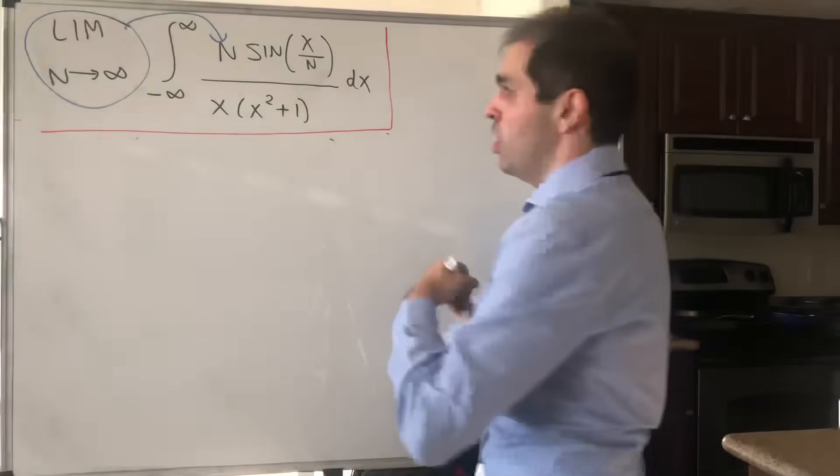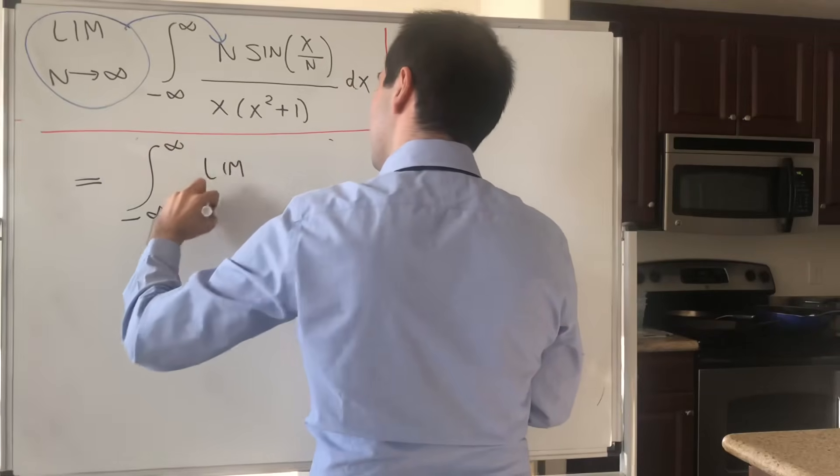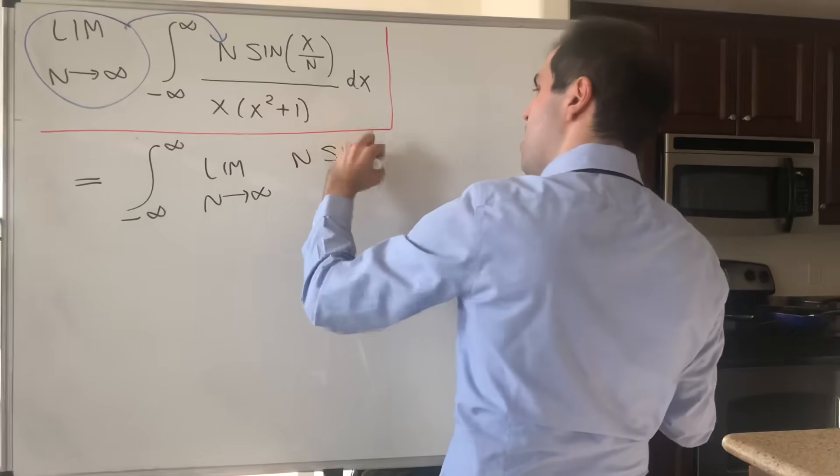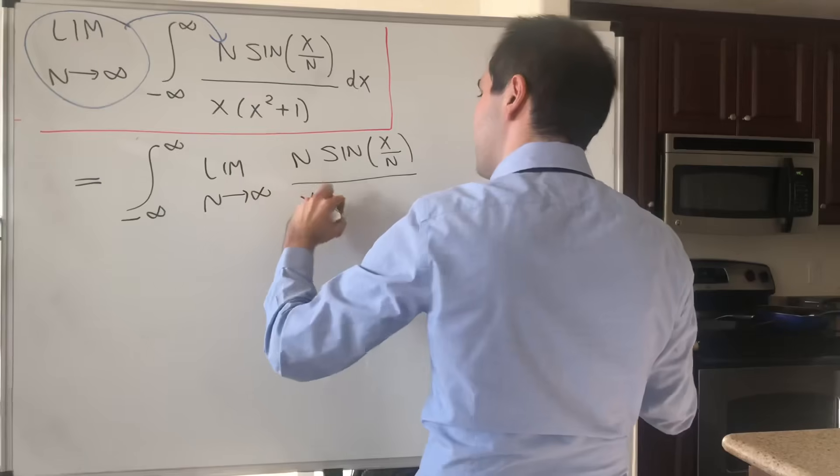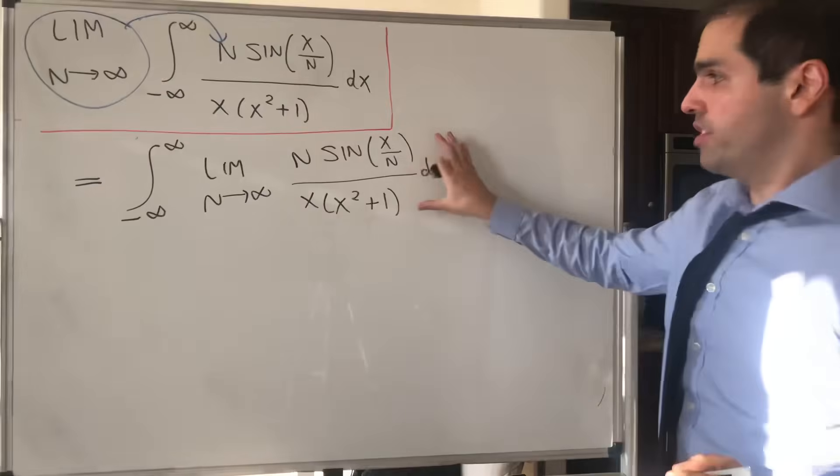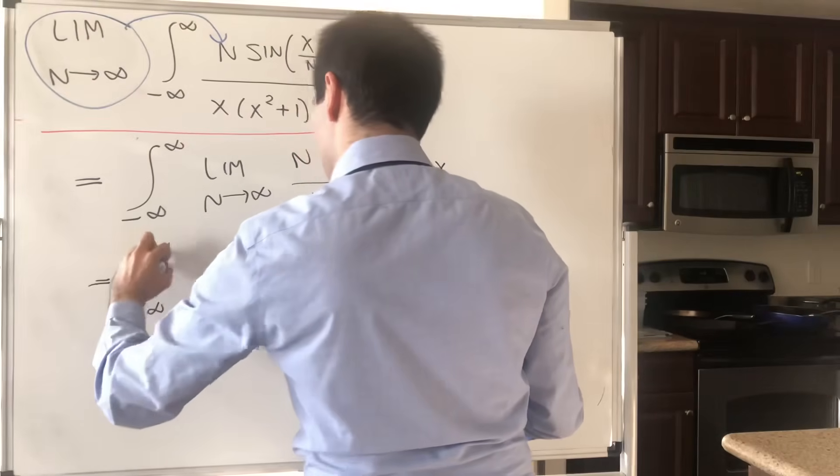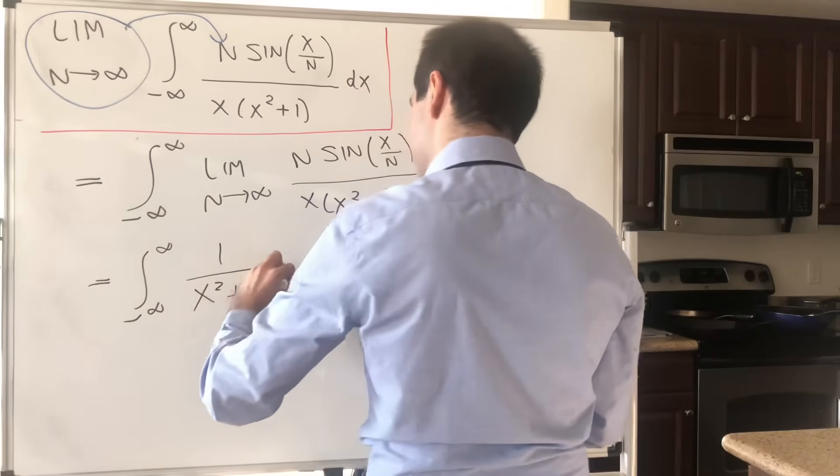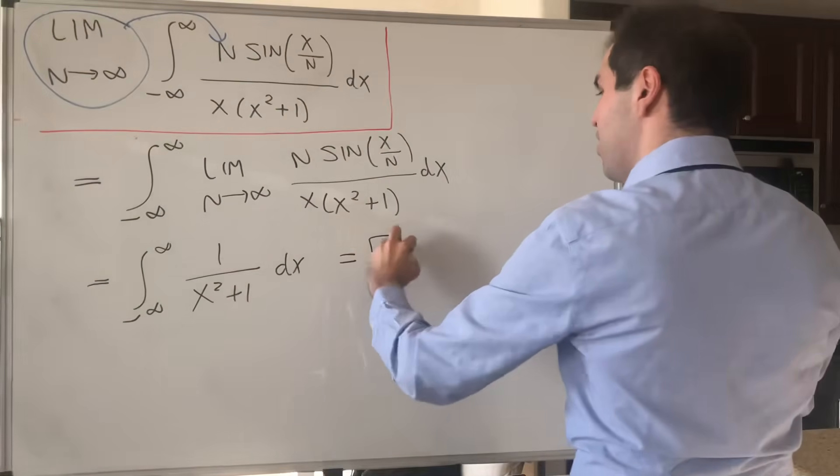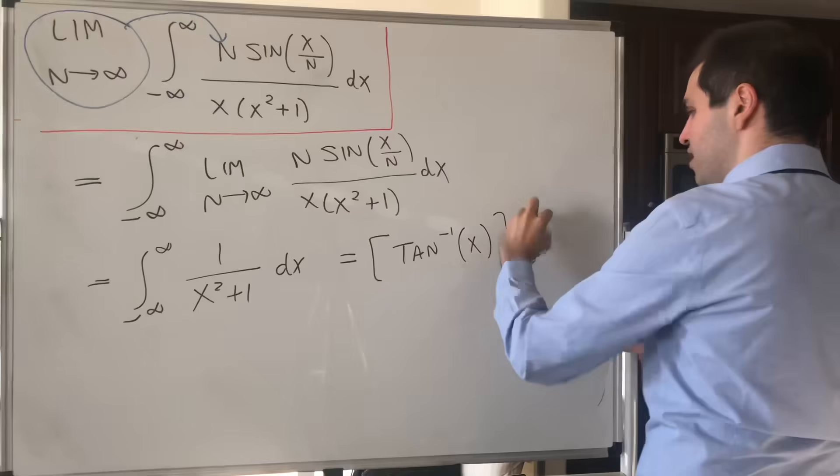And we would get the following. This limit of the integral is just the integral of the limit. Limit n goes to infinity of n sine of x over n over x times x squared plus 1 dx. And we just calculated that limit to be 1 over x squared plus 1 dx. And the integral of that is easy to calculate, because the antiderivative is arctangent.